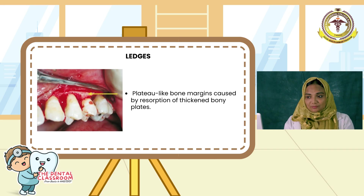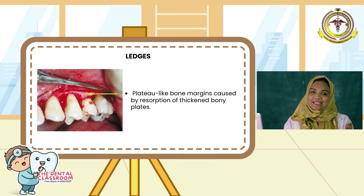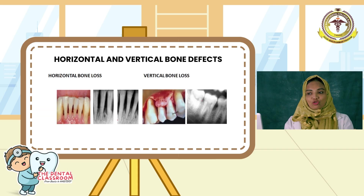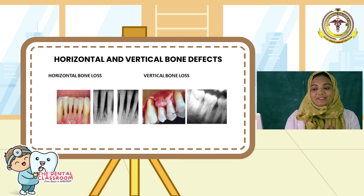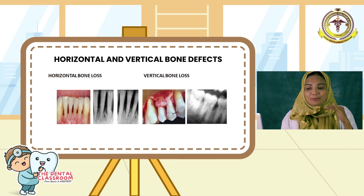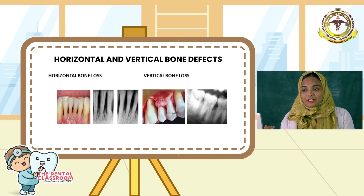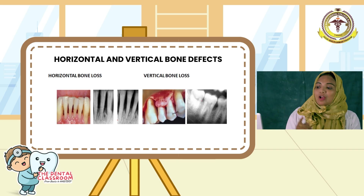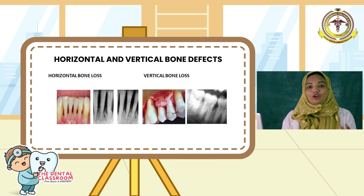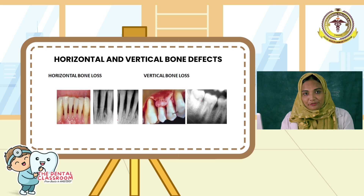Next is ledges: they are plateau-like bone margins caused by the resorption of thick bony plates. Next, horizontal and vertical bone loss. You can see in the figure — in horizontal bone loss, there is symmetrical reduction in the height of the alveolar bone, because disease progression occurs at an even rate. Whereas in vertical bone loss, you can see an angular or funnel-shaped defect, because disease progression occurs at different rates.